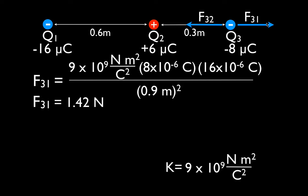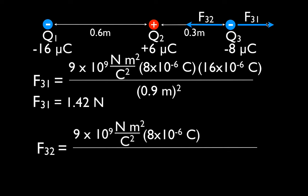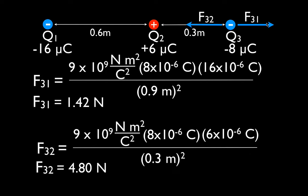Now we're going to do the same thing for the force on Q3 from Q2. Again, K times the magnitude of Q3 times the magnitude of Q2, divided by the distance separating them — 0.3 meters — squared. We multiply through and divide, and we get that the magnitude of F32 is 4.80 Newtons to the left.